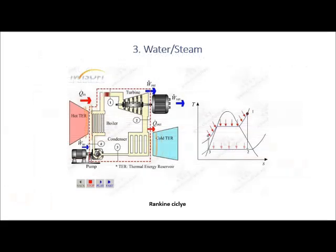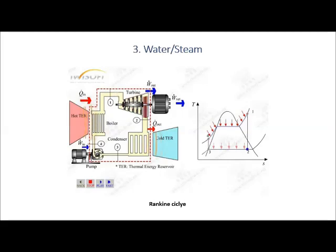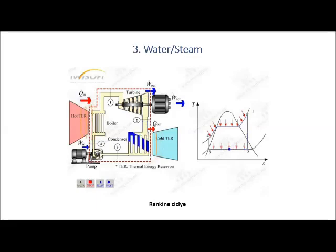Three, water and steam. Considered as one of the best heat transfer fluids, it offers an excellent exchange coefficient and has a high thermal capacity. Besides, it can be used directly as a working fluid in a Rankine cycle. However, its use involves working at very high pressures in the receivers because of the high temperatures reached.